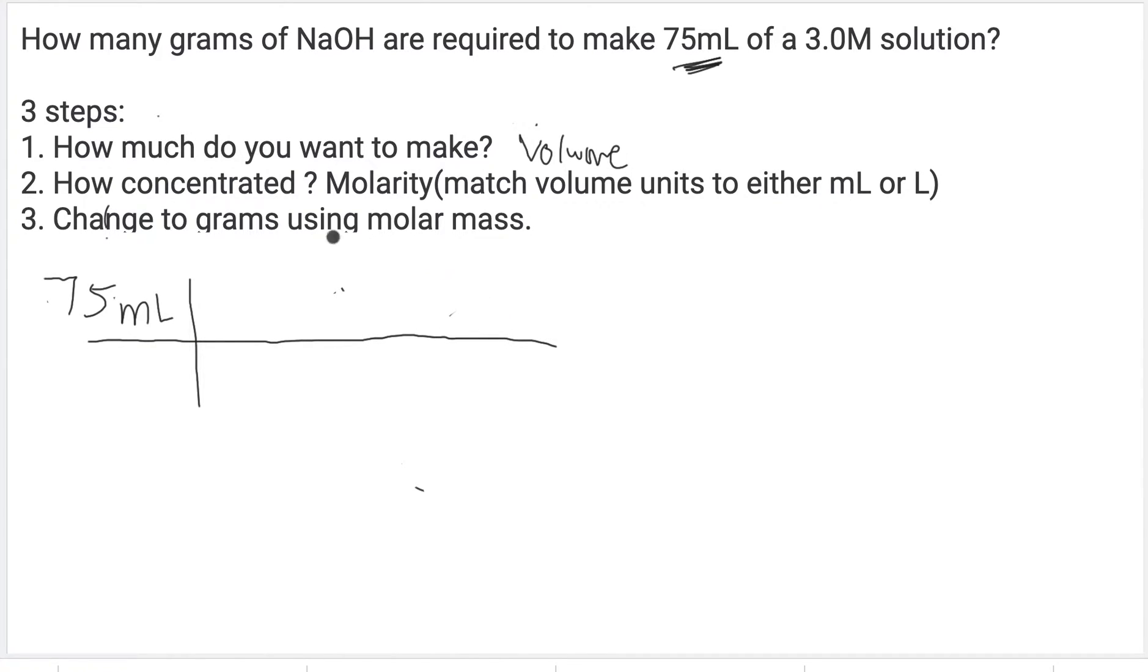That's the first step. The second step is: how concentrated do you want it? That's the molarity. When you see 3.0M, that means you want to make it with 3.0 moles in one liter, but that's also equal to 3.0 moles in 1000 milliliters because one liter equals a thousand milliliters.